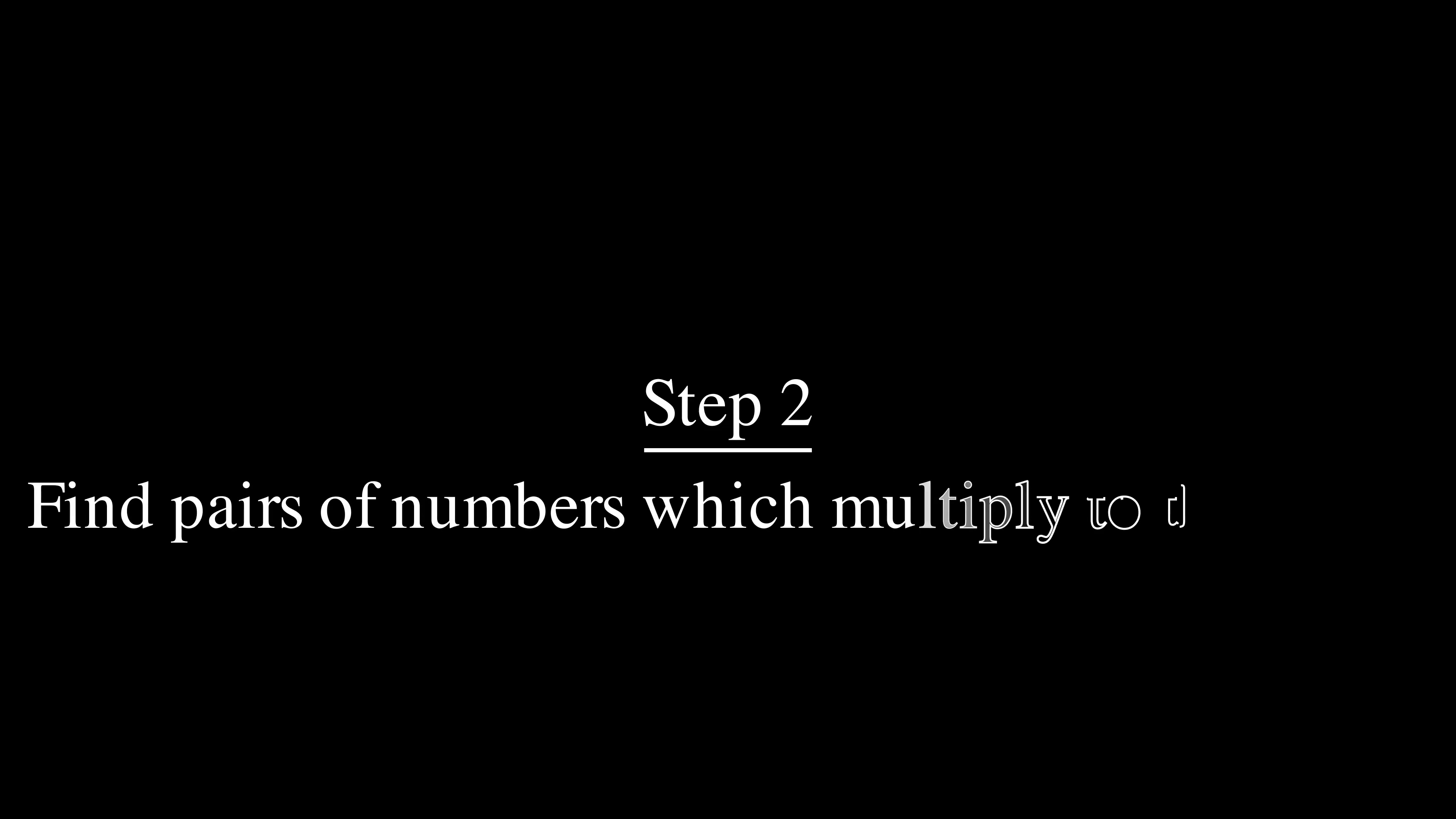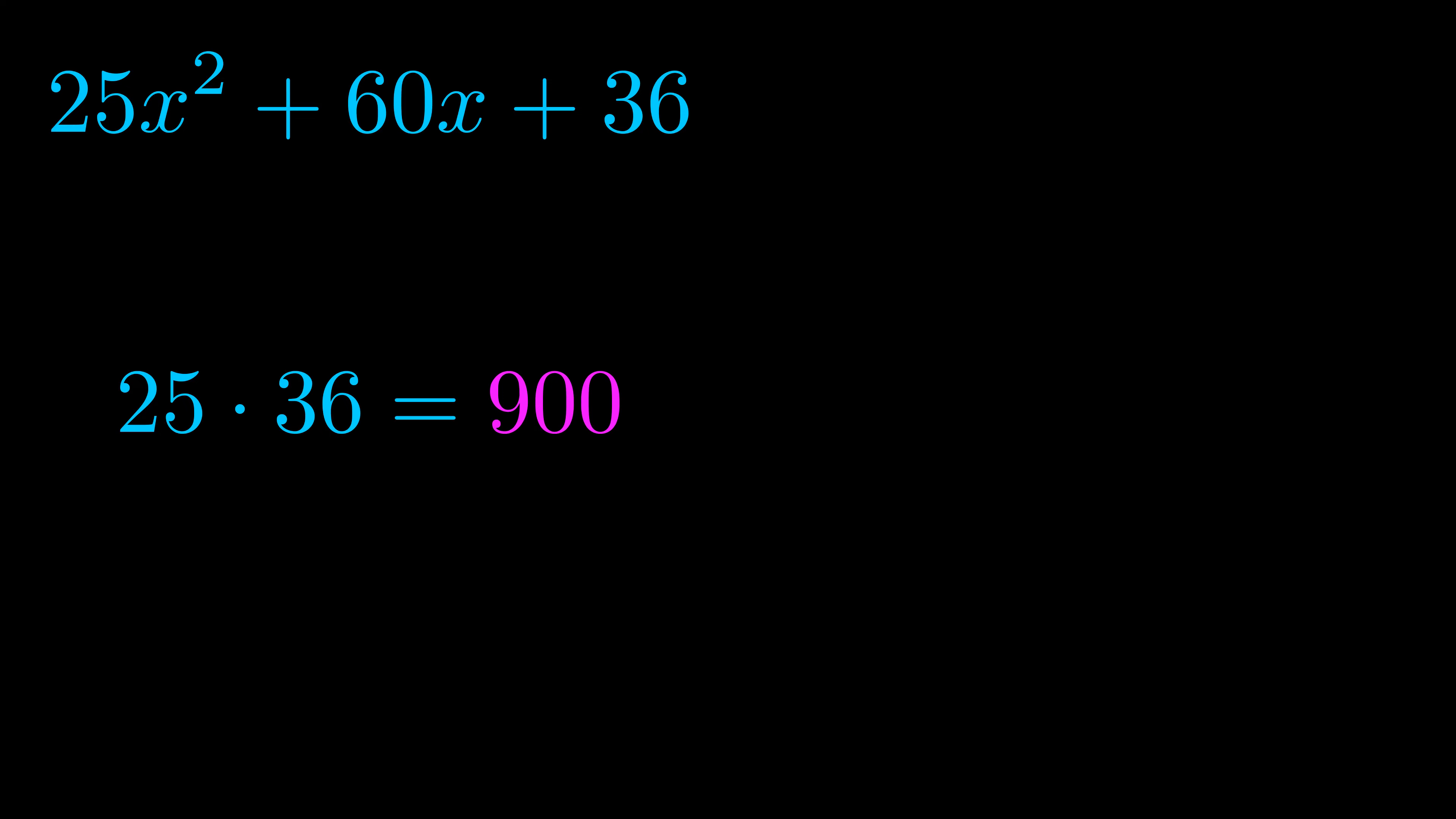Step two is to try to find all of the pairs which multiply to this number. Now turns out you don't really need to find all of them but go ahead and write down as many numbers as you can that multiply to the magenta value for now. Pause the video and resume when you're ready to continue.